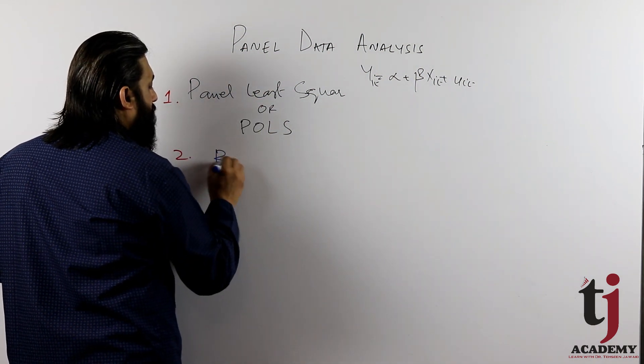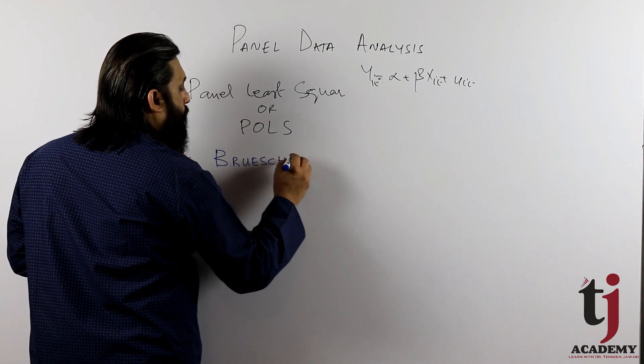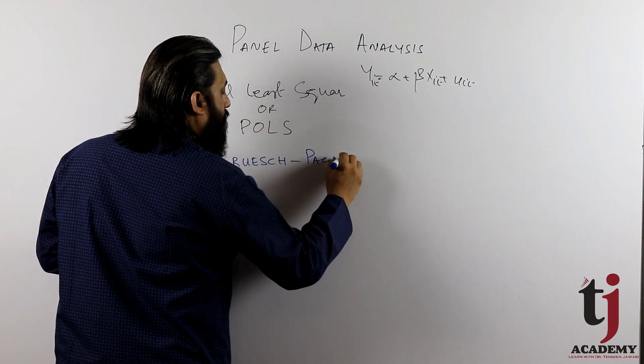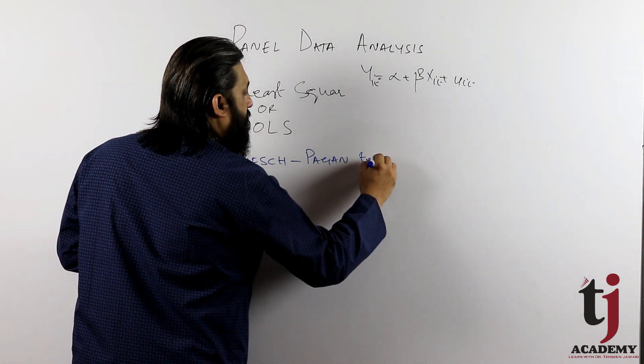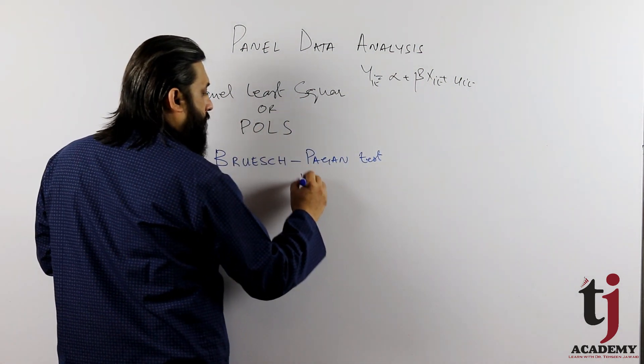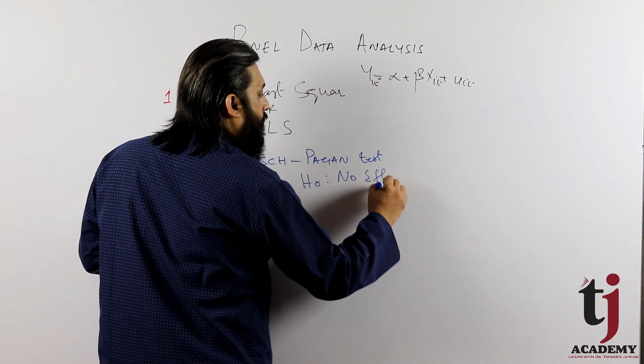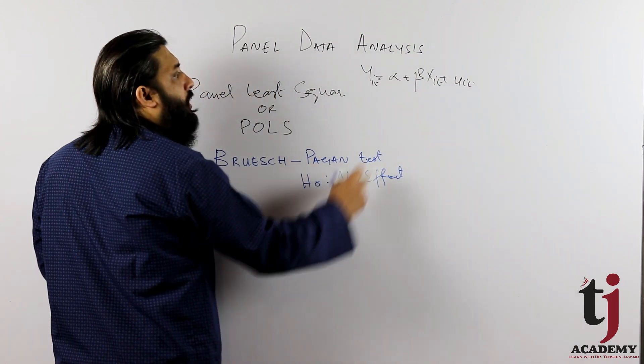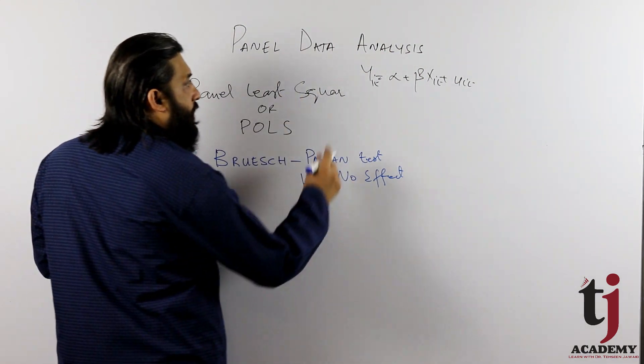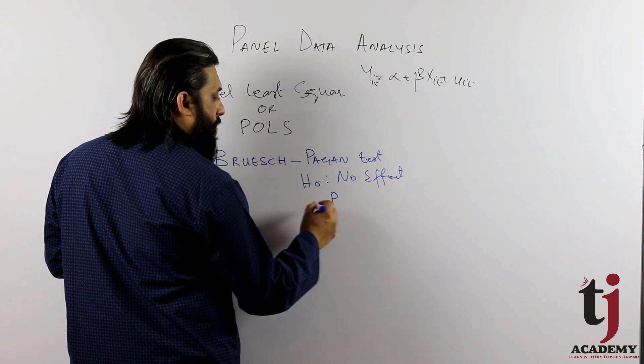And this is the program that we have to, the Breusch-Pagan test apply. Breusch-Pagan test, hypothesis H0, null hypothesis: no effect, no effect on entities, intercept no effect, all the same. If this p-value, for example,